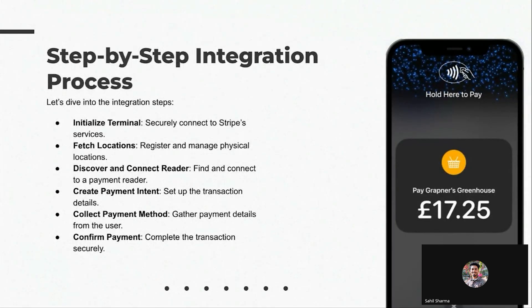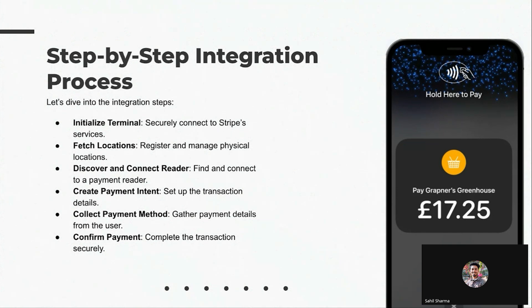Here is the step-by-step integration process. First, we need to initialize the terminal. To do that, we make an HTTP request with the secret key, and after receiving the response, Stripe will provide us with a connection token.